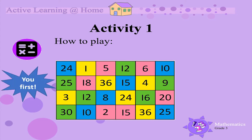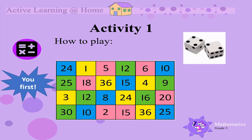You go first. Roll the dice and look at the 2 numbers. Multiply the 2 numbers together. 4 times 2 is 8. Take your counter and place it over the number 8 on the board.